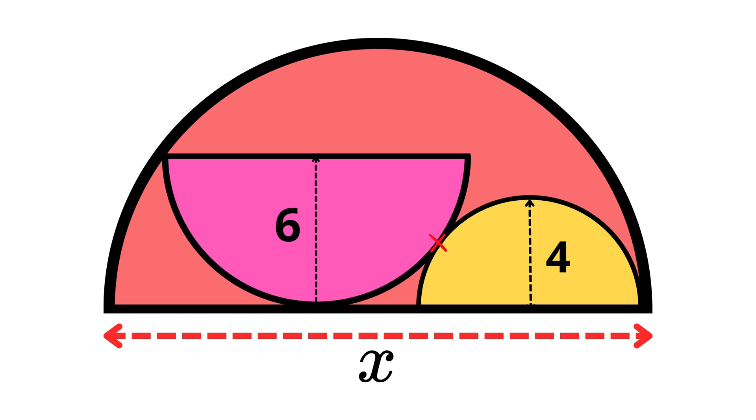The two semicircles are touching, and if we rotate our radial line, we know that the distance from that point to the top of the pink semicircle is 6, and the distance from that point to the base of the yellow semicircle is 4. So the total length of that line is 10 meters.